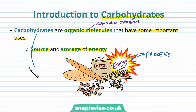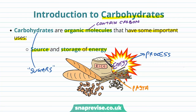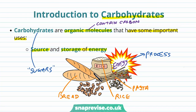Carbohydrates can be termed as sugars as well. We can find sugars in foods — for example, pasta, rice, and bread. There are lots and lots of different sources of different types of carbohydrates.